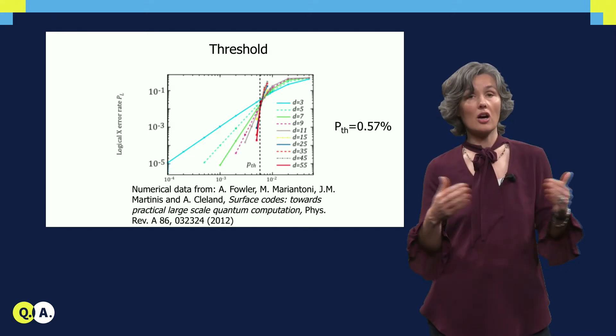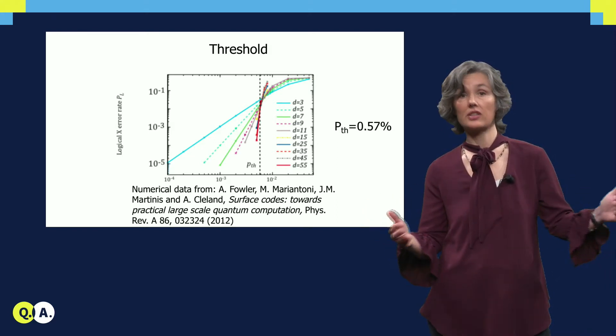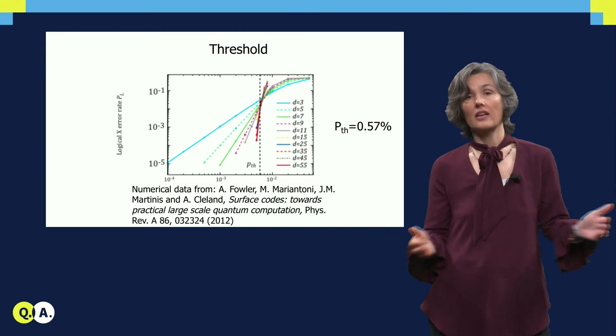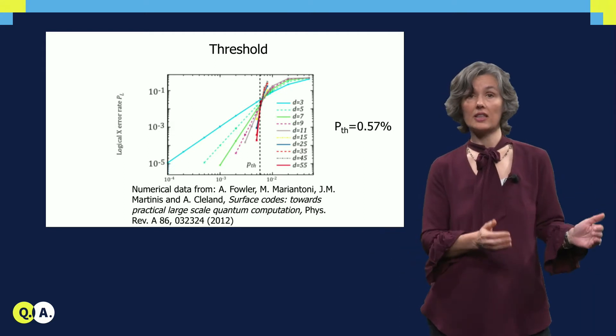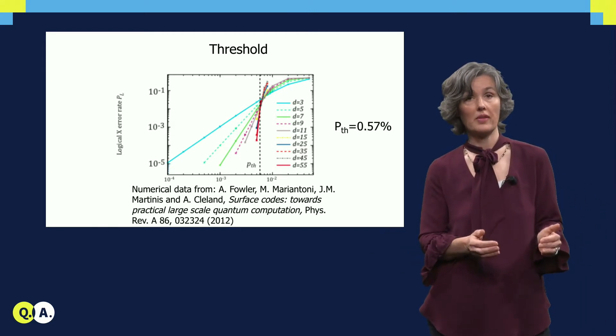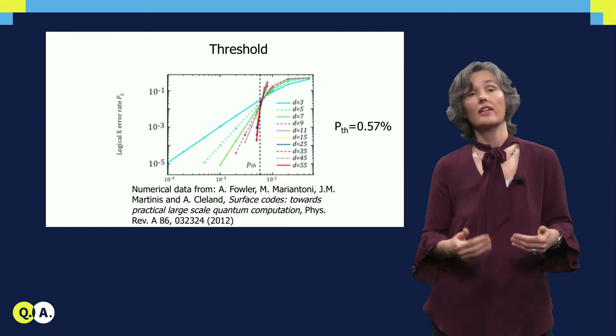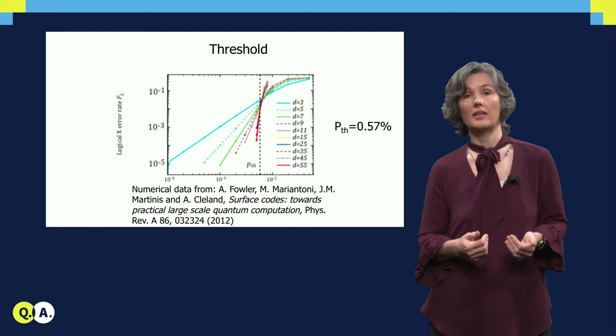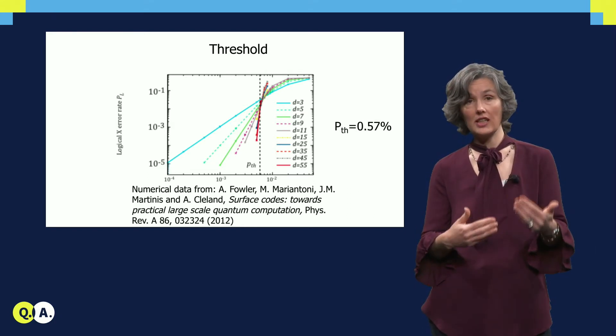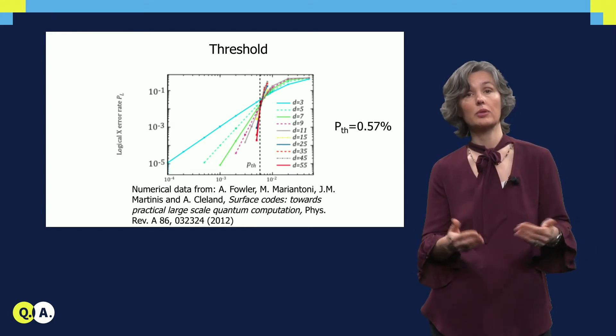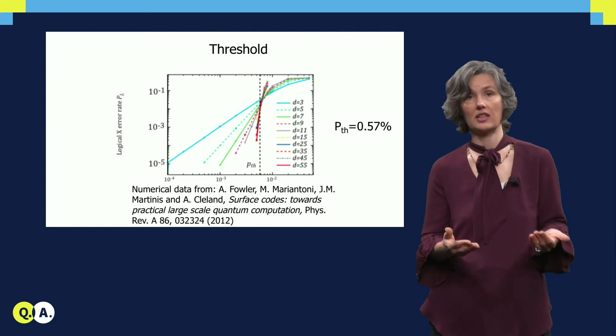Now we can imagine using larger and larger surface codes with distance 3 and up. If the error rate on each gate is below some critical value, the error correction process, these error correction cycles, they improve with larger d. Namely, what we see is that the logical failure rate will decrease exponentially in d.